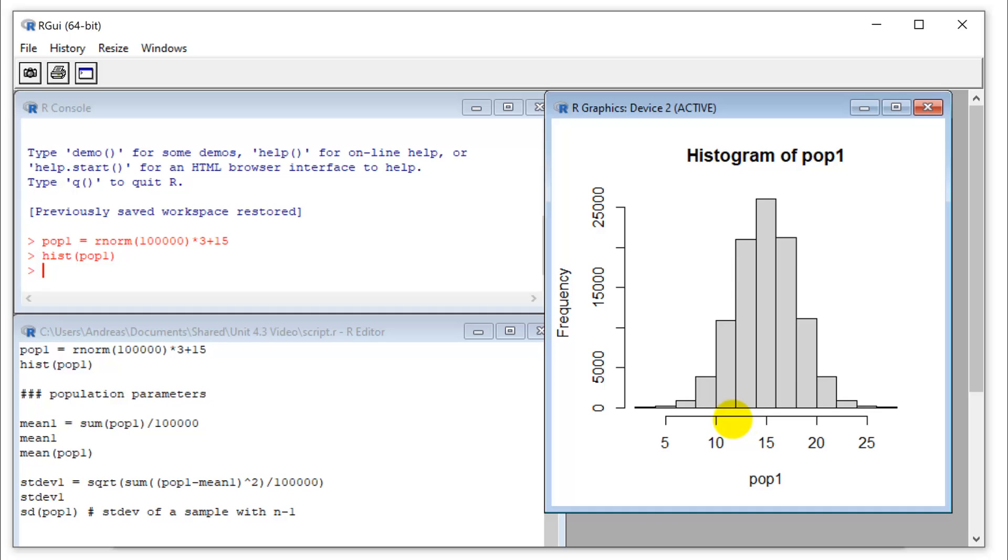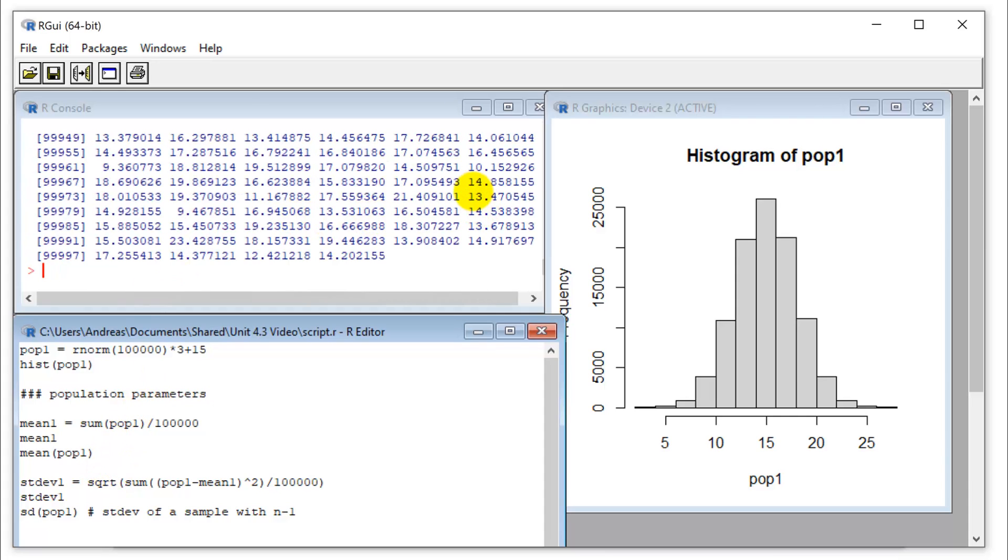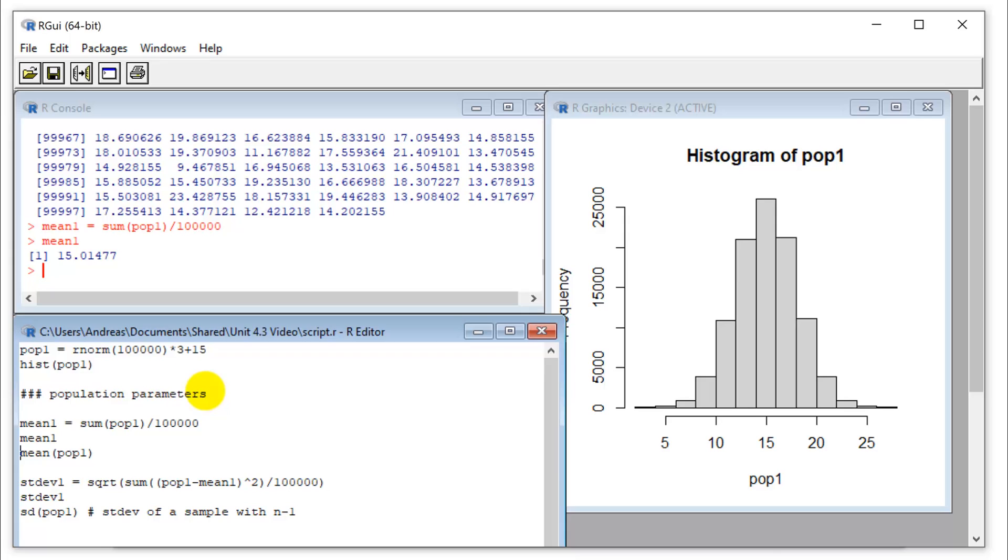So I multiply this by 3, they have a standard deviation of 3. And then I add 15. So that's my average height. Let's do this. And then let's look at the histogram. And lo and behold, this works out really nicely. We have a mean of 15 and a standard deviation of roughly 3. And I can actually calculate this. So I'm going to sum up all the values that are in my population.